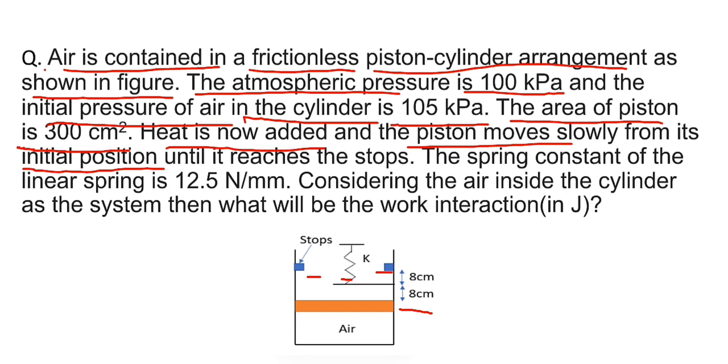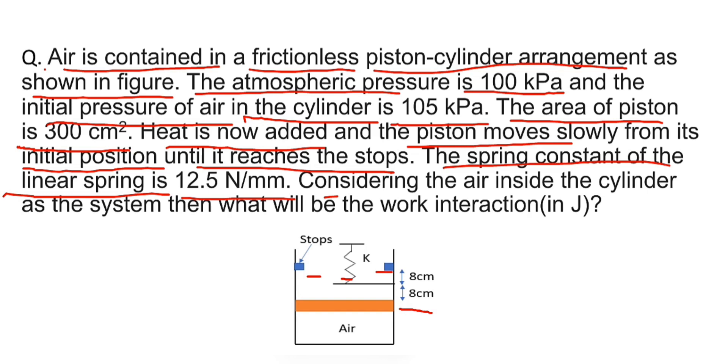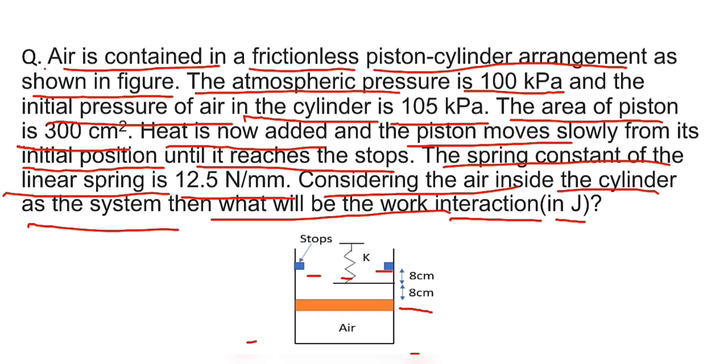Heat is now added and the piston moves slowly from its initial position until it reaches the stops. The spring constant of the linear spring is 12.5 N per mm. Considering the air inside the cylinder as the system, what will be the work interaction in Joules?